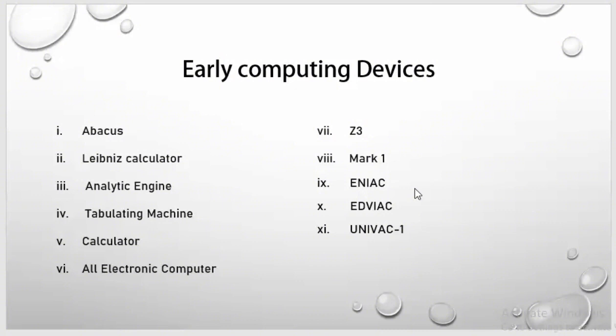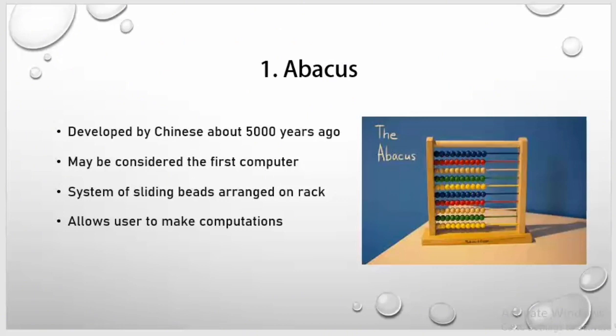Now let's discuss these devices one by one. First one is Abacus. Abacus was developed by the Chinese about 5000 years ago. It may be considered the first computer and first calculating machine. It worked on the system of sliding beads arranged on rods, as you can see in the picture, and it allowed users to make computations.